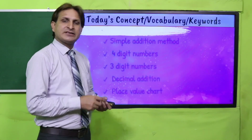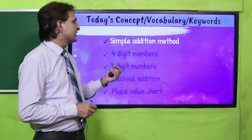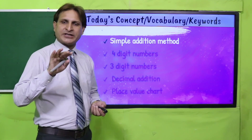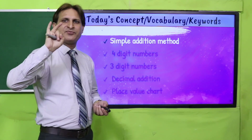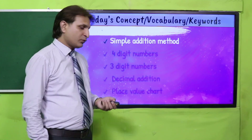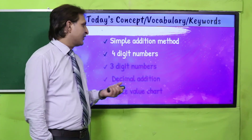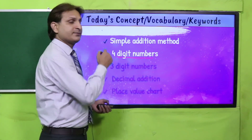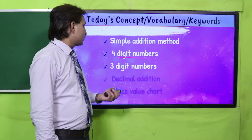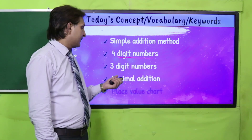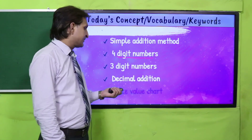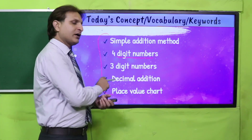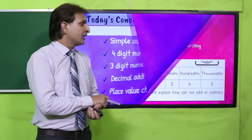Ab aate hain keywords ki taraf jo ke hum log yahan par use karenge. Simple addition method use karenge. Horizontal method of addition hota hai; vertical method of addition hota hai. Wahi simple addition method yahan par bhi hum log use karenge. Four-digit decimal numbers hain — three decimal places tak — aur decimal addition place value charts ka use karke karni hai. In keywords ko hum log mostly aaj ke lesson mein use karenge aur fulfill karenge.